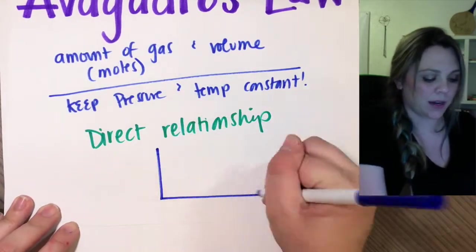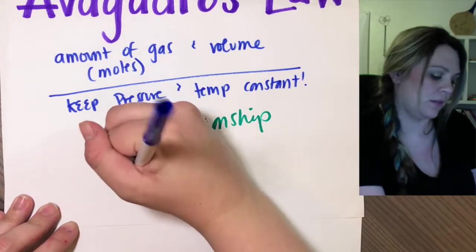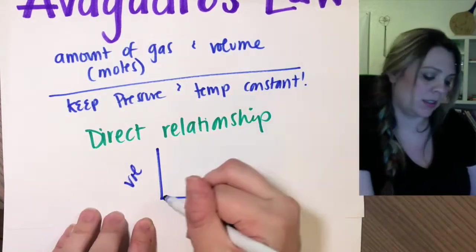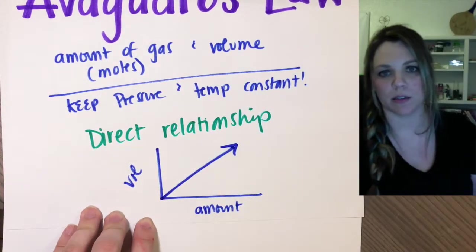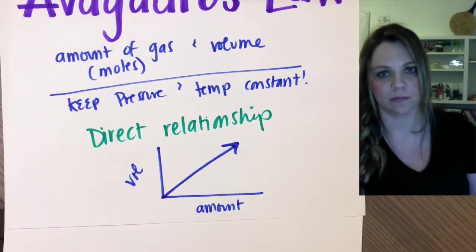And the way we would show that in a graph, amount versus volume. Again, a direct relationship. As one of them is going up, the other is also going up.